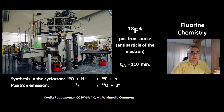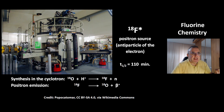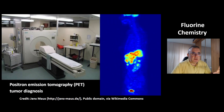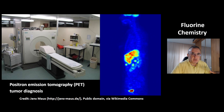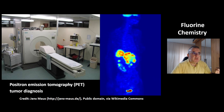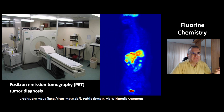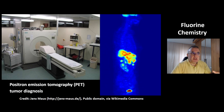The isotope fluorine-18 is a source of positrons — antiparticles of electrons. This isotope has a half-life of 110 minutes and can be synthesized in a cyclotron by hitting oxygen-18 isotopes with protons. Fluorine-18 can then emit positrons, which are beta-plus particles. A patient gets an injection of a compound containing fluorine-18, and then a positron emission tomography (PET) scan can be performed. This method is used for tumor diagnosis.